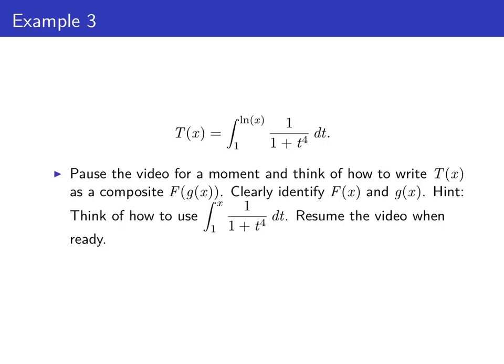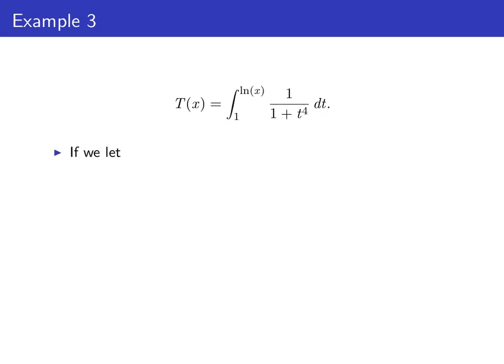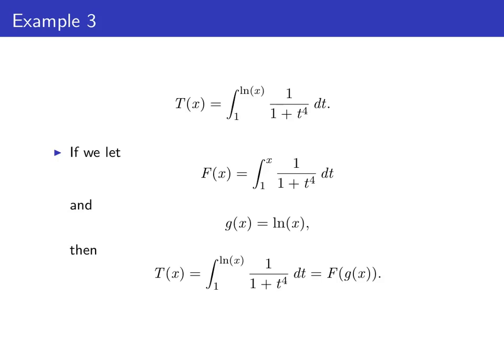Pause the video for a moment and think about how we might write capital T of x as a composite F of g of x, and clearly identify what F of x and g of x are. You might want to think about how we would relate T to the integral from 1 to x of 1 over 1 plus t to the 4th dt so that we can use the second fundamental theorem. We want to write T as a composite. Let F of x be the definite integral from 1 to x of 1 over 1 plus t to the 4th dt. Then to get T, we replace x in the upper limit with ln x, so we let g of x be ln of x. Then T of x is, in fact, F of g of x.